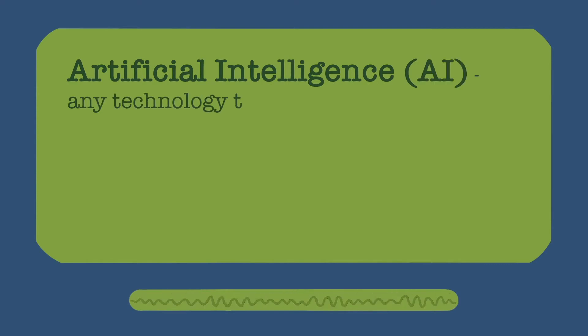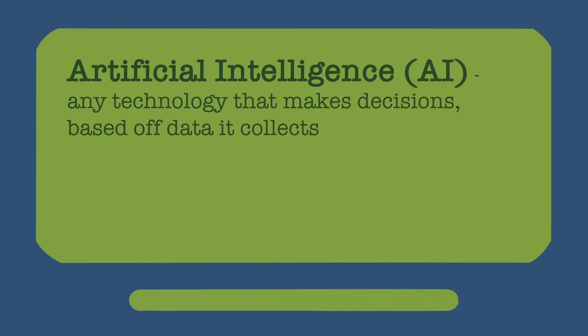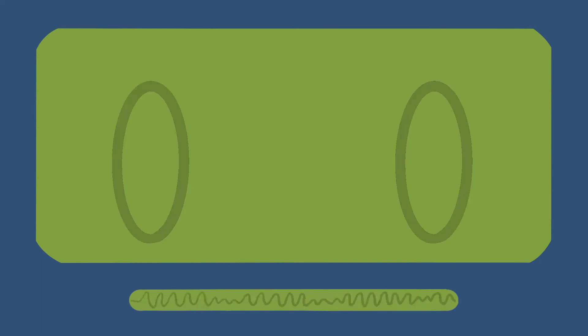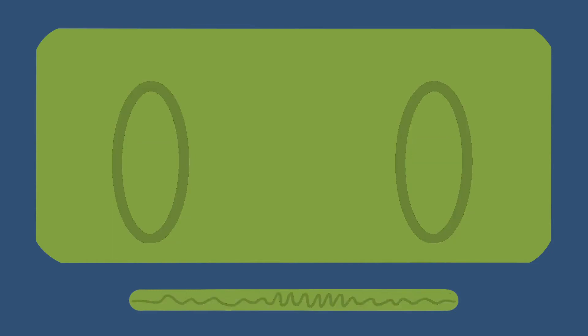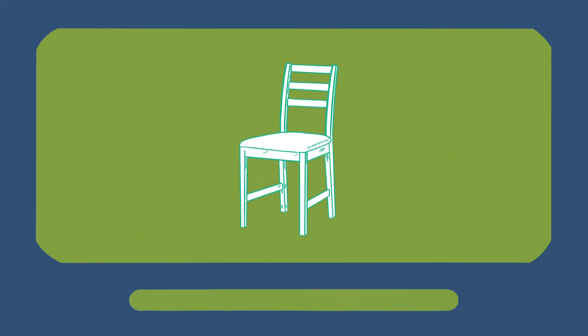Artificial intelligence, or AI, is another powerful tool technology offers us. AI is a broad term for any technology that makes decisions based on the data it receives. To break it down: let's say you want to train a computer to identify a particular object in any photo. For our example, that object will be a chair. To teach the computer to identify any chair, we first need to show it what a chair looks like, so we give it a picture of a regular wooden chair.